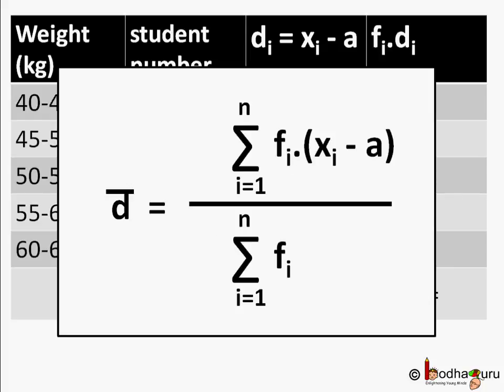So mean of deviations d bar equal to sum of all fi di divided by sum of frequencies fi. Now each deviation di equal to xi minus A. So we will put this value in the equation. So d bar becomes sigma fi into xi minus A divided by sigma fi. But how will d bar give us the mean x bar that we wanted to find out? Let us find out.